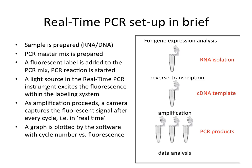A light source, which is present in the real-time PCR instrument, excites this fluorescence within the labeling system. As amplification of your target proceeds, a camera is able to capture this fluorescence signal after every cycle, i.e. in real-time. A graph will be plotted by the software, giving you the cycle number versus the fluorescence. On the right, there is a typical setup for a gene expression analysis experiment, but I will leave that until later where I can talk about the setup in more detail.